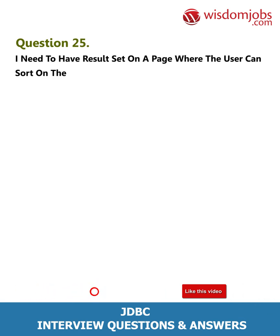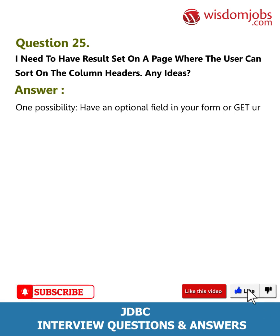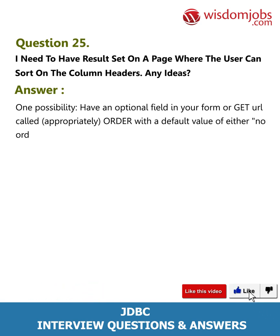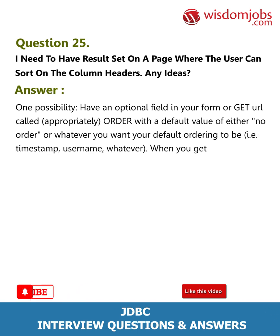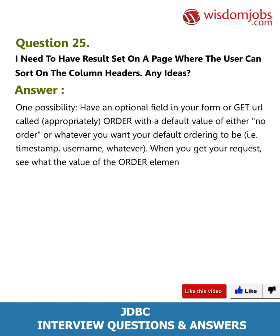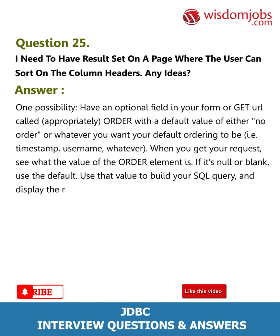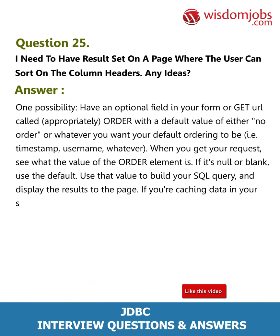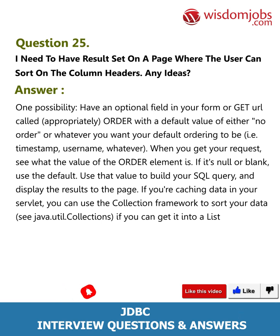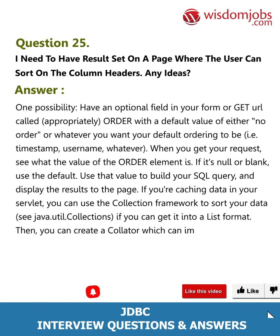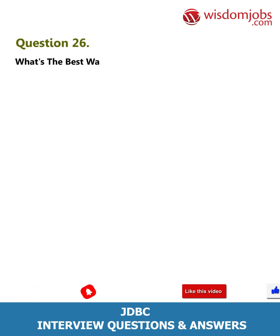Question 25: I need to display results on a page where the user can sort on the column headers — any ideas? Answer: One possibility is to have an optional field in your form or GET URL called 'order' with a default value. When you get your request, check the value of the order element; if null or blank, use the default. Use that value to build your SQL query and display the results. If you are caching data in your servlet, you can use the Collections framework — see java.util.Collections. If data is in a List, you can create a Collator to impose a total ordering on your results.